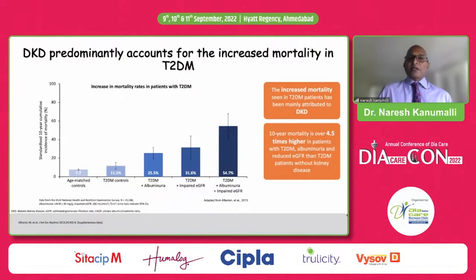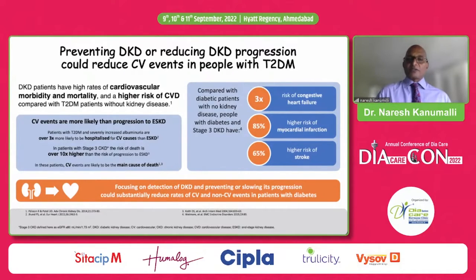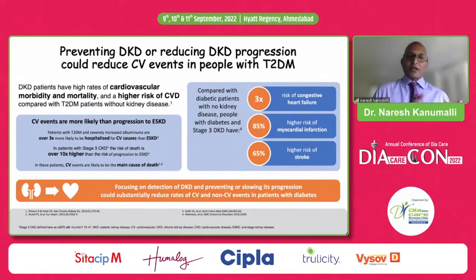Diabetic kidney disease predominantly accounts for the increased mortality in type 2 diabetes. If you have type 2 diabetes combined with albuminuria and impaired eGFR, your risk is 4.5 times higher than having just one of those conditions. Preventing diabetic kidney disease or reducing its progression could reduce cardiovascular events, but don't forget the importance of managing blood pressure and lipids as well.